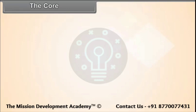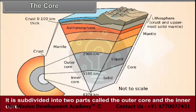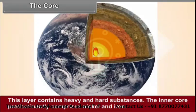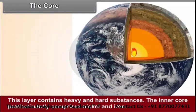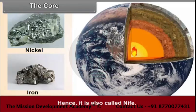The core. This layer lies below the mantle and has a thickness of 3,471 kilometers. It is subdivided into two parts called the outer core and the inner core. The outer core is in liquid state while the inner core is in the solid state. This layer contains heavy and hard substances. The inner core predominantly comprises nickel and iron. Hence, it is also called Nife.